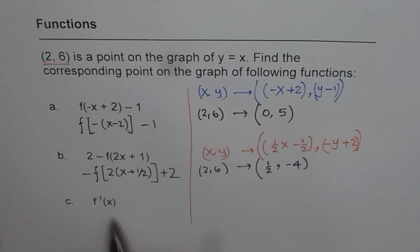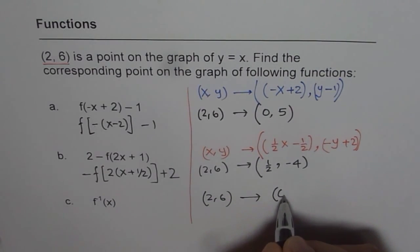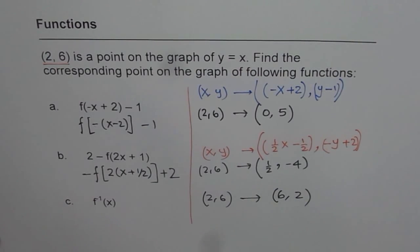f inverse x will mean that the coordinates of the points swap. So we get (6,2) as the point on the inverse function.